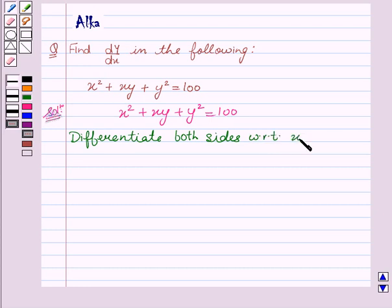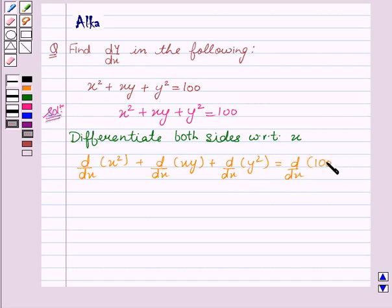We get d/dx(x²) + d/dx(xy) + d/dx(y²) = d/dx(100). This equals: d/dx(x²) is 2x, plus we will apply the product rule in d/dx(xy).